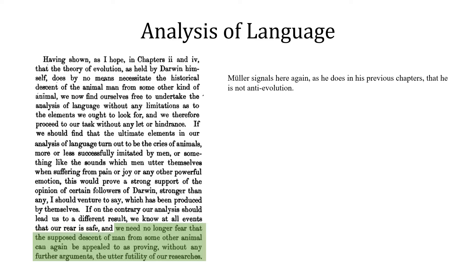A brief note here: Mueller is not against evolutionary theory. In fact, he accepts it wholeheartedly. However, he believes that the interpretation of evolution provided by the theorists of his time is limited in its causal explanation. It is worth thinking about why we should believe that language is nothing other than animal cries and emotional utterances. Is that all mathematics is? Couldn't it be said of evolutionary theory itself? What cry or emotional whim does evolutionary theory represent in the repertoire of human language?